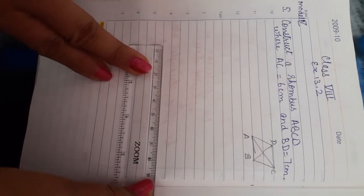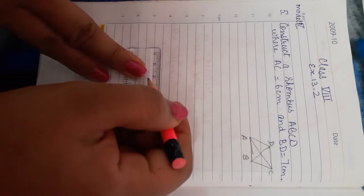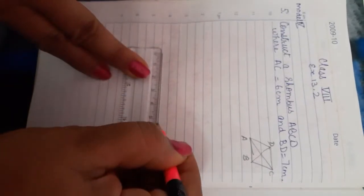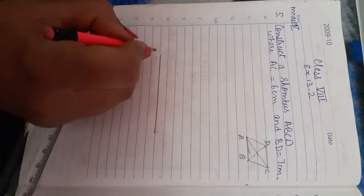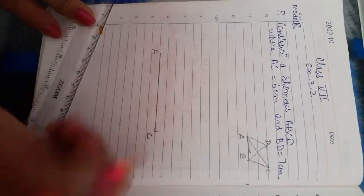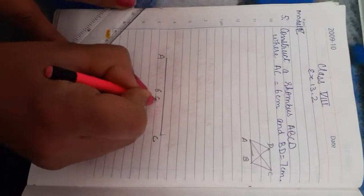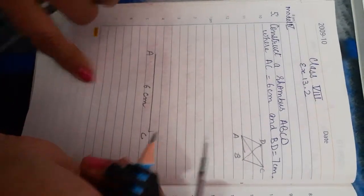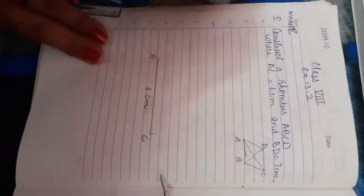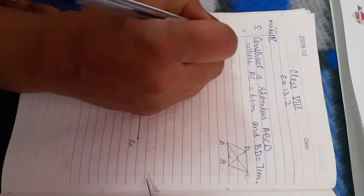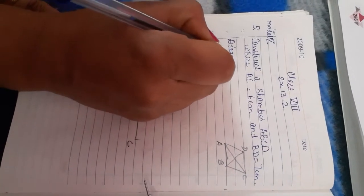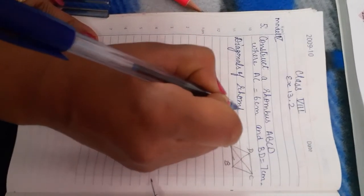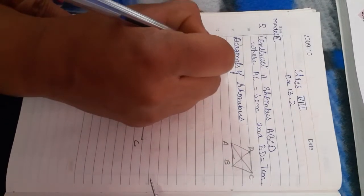First step: draw one diagonal, suppose AC diagonal, 6 centimeter. Now here we will apply the rhombus property. Diagonals of rhombus bisect each other at 90 degrees.